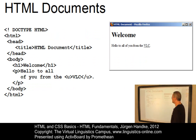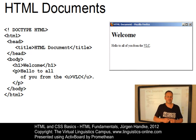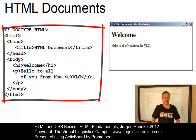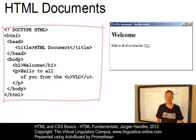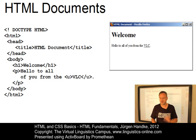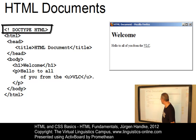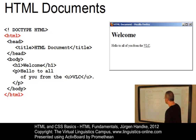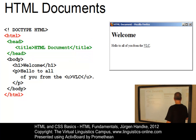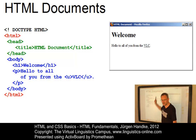Let's now look at the basic document structure. All HTML documents have the same basic structure. They consist of some text — the HTML code — which defines the content and the structure of the document. Well-formed HTML documents consist of the following basic components: first, the document type definition; then two HTML tags which surround all other tags; then a document header; and a document body. So all HTML documents consist of four components: the document type definition, two HTML tags, the header, and the body.